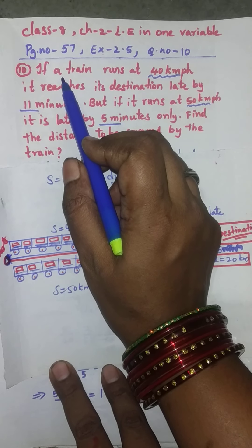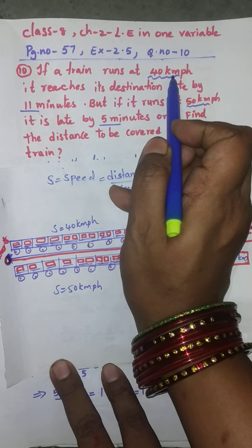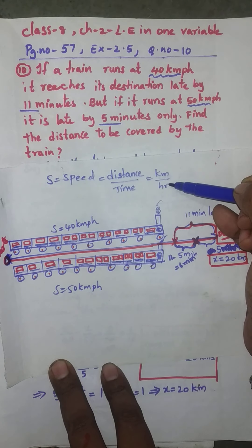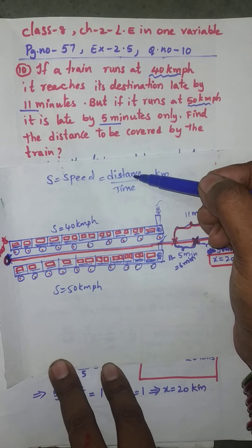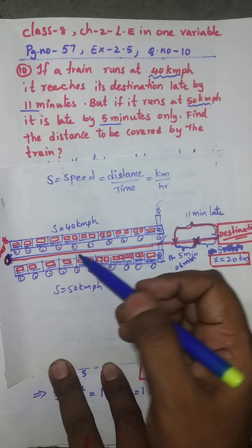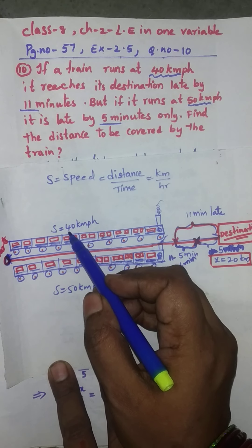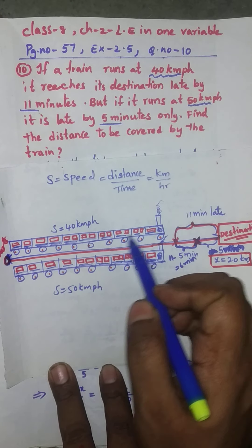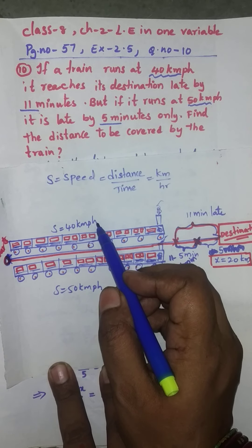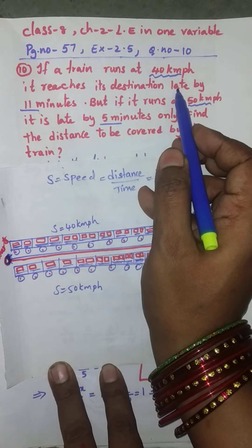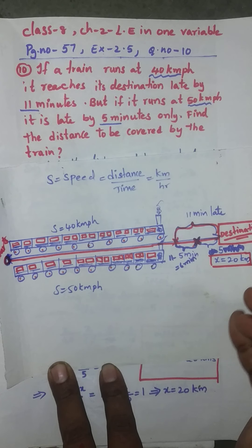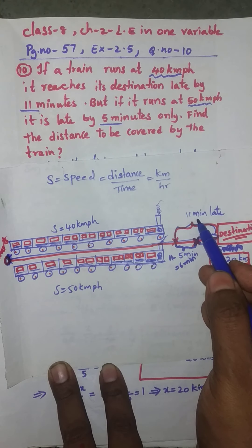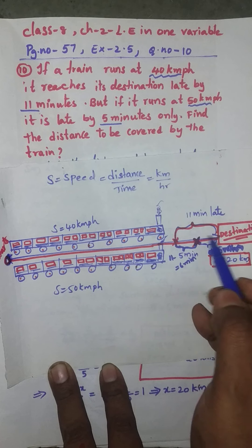If a train runs at 40 kilometers per hour — and kilometers per hour is nothing but distance by time, which is speed — the speed of the train is 40 km/h. It reaches its destination late by 11 minutes. So here is the destination, and the train arrives 11 minutes late.